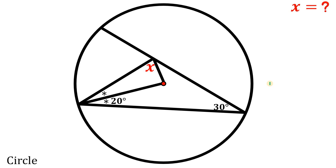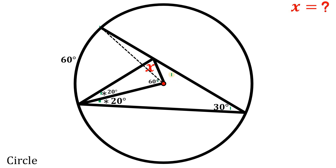So given this figure, the goal is to find the measure of angle x. Now in this given, we know these two angles are the same thing, so this angle simply also equals 20 degrees for sure. Now since this angle is 30 degrees, using the inscribed angle theorem, this intercepted arc must be twice of 30, or simply equal to 60 degrees. And now we're going to use the central angle theorem — from the center let's draw a radius at this point, and we know this angle right over here is simply equal to 60 degrees by the central angle theorem.